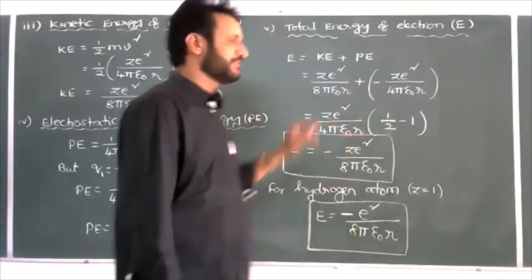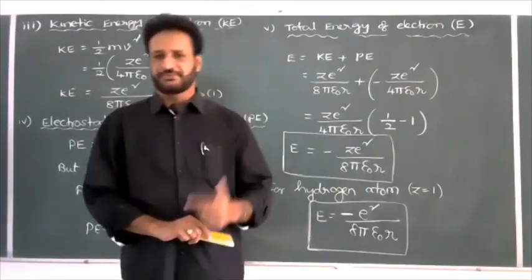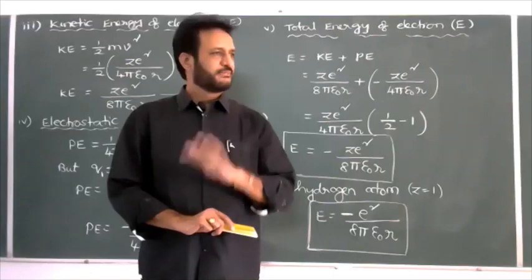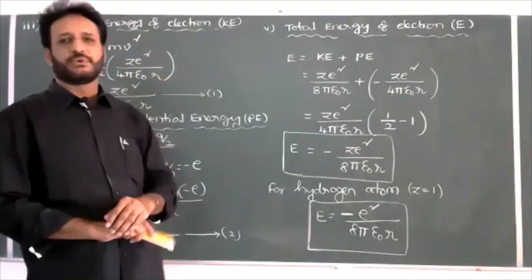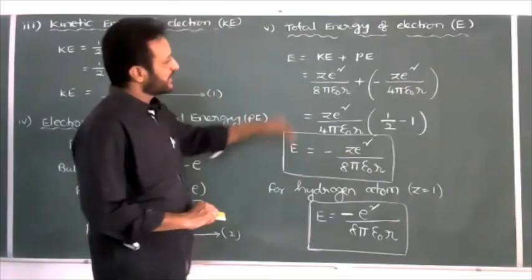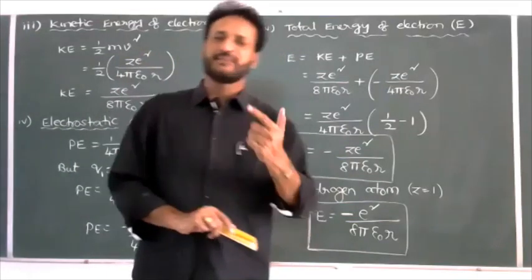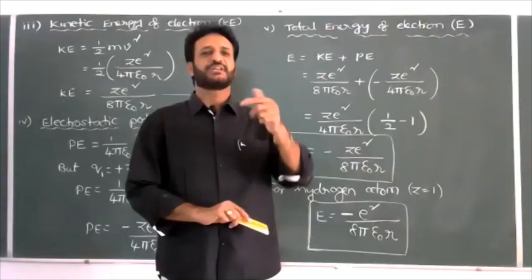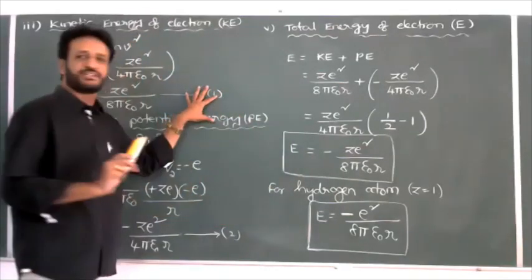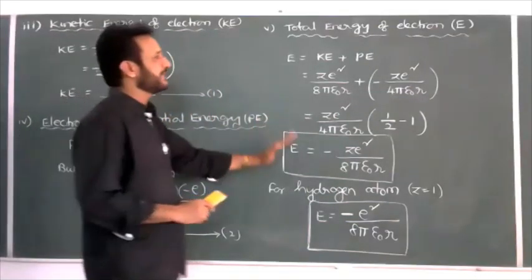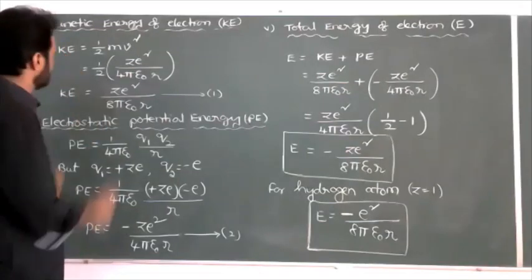These are the important expressions derived using the Rutherford model. In the final exam, if they ask 'derive an expression for total energy of electron in an atom by using the Rutherford model,' use this derivation. Later, after the Bohr model, we will also derive the formula for total energy. In the Bohr model, the question will say 'derive an expression for total energy of electron in the stationary orbit of hydrogen atom' — the key word is stationary orbit. If that word appears, go to the Bohr model.